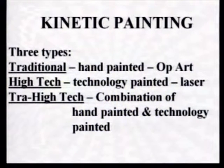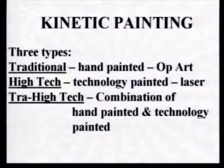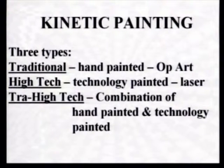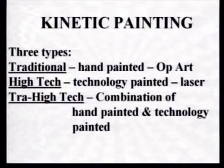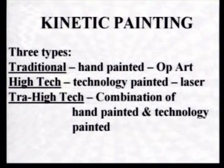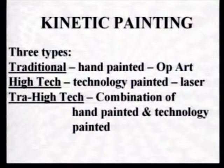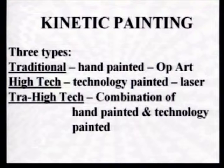Now that I've explained the basic types of motion and the three categories in kinetic fine art, I've laid the groundwork so that whatever I say about kinetic painting, anyone can place it in reference. The three categories I give for kinetic painting: one is hand-painted — it can be strictly hand painted. Op art, even though it wasn't called kinetic art, could be considered kinetic art because it creates motion in your brain as you view it.